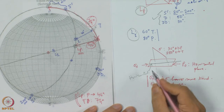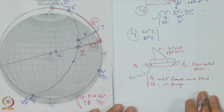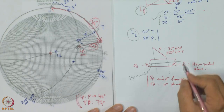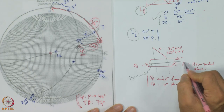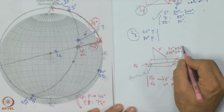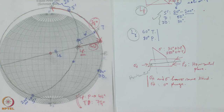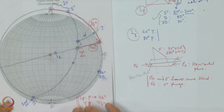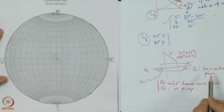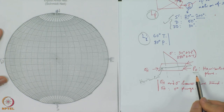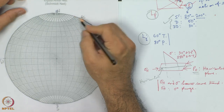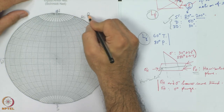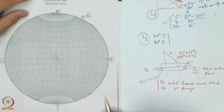Even this simple thing we want to do on the stereonet so that there is no confusion. We are going to plot horizontal plane P0 and plot sigma. P0 is a horizontal plane, and the horizontal plane's stereographic projection is the peripheral circle. This represents the horizontal plane — this represents P0 — it is already drawn.